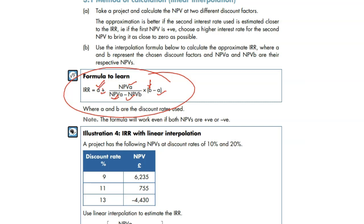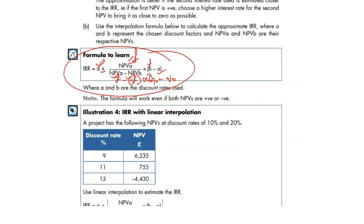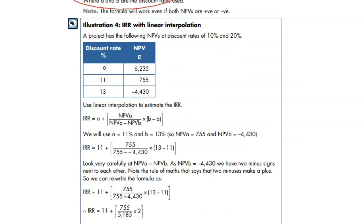Percentage, which should be positive, plus NPV A means positive NPV monetary value, divided by NPV A means positive NPV monetary value minus, there will be another minus in bracket because it's a negative NPV monetary value, times by B means negative NPV percentage minus positive NPV percentage. Let's put that idea into some figures.